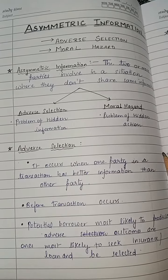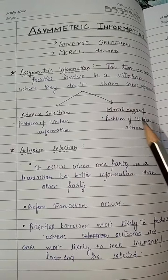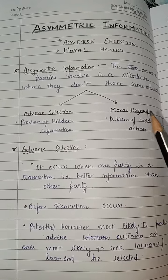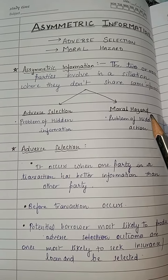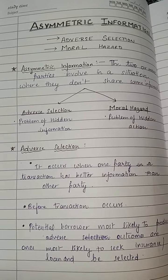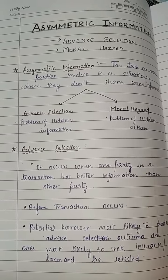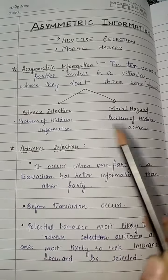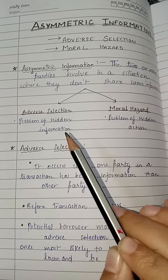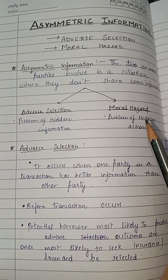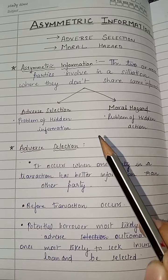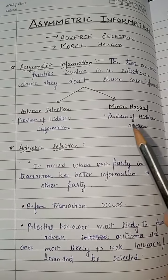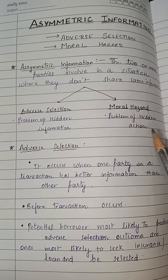Two parties are always involved in a transaction. Asymmetric information is that situation where one party involved in a transaction has more or less information than the other concerned party. The first type is adverse selection, the second is moral hazard. Adverse selection is the problem of hidden information, and moral hazard is the problem of hidden action.